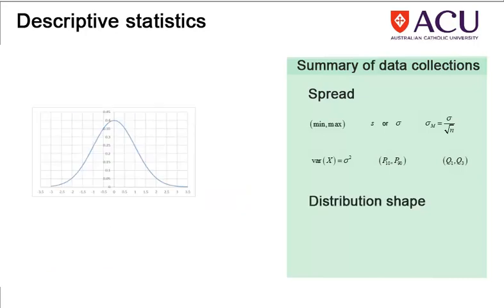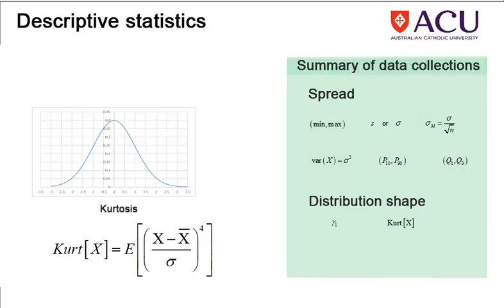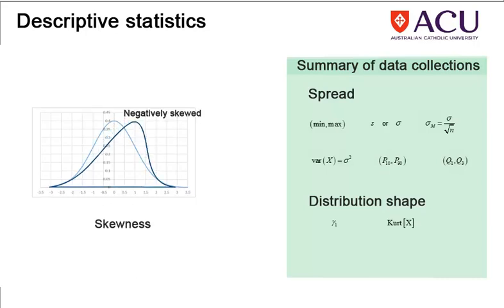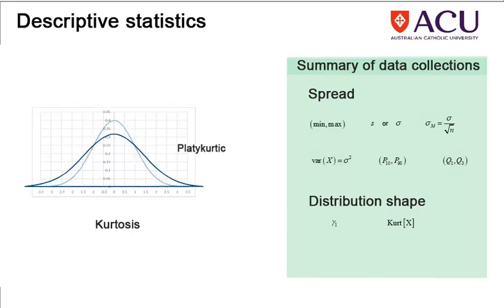Finally, statistics that describe divergence from the expected distribution may be reported including measures such as skewness and kurtosis. Skewness measures how biased the sample is to one side or the other. Kurtosis measures how flat or peaked the sample is.